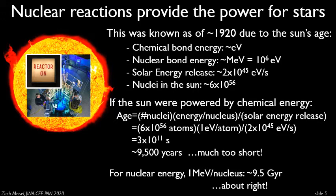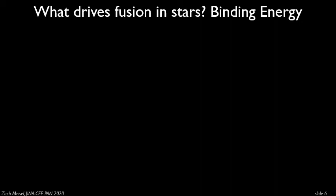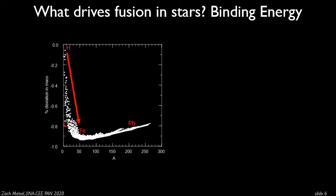So we know stars are nuclear reactors. What's actually driving these nuclear fusion reactions? We can understand this in terms of the binding energy — basically how much energy is stored when you take a bunch of protons and neutrons and combine them to make an atomic nucleus. If you took any given nucleus, you could weigh the individual nucleons — the protons and neutrons — separately, add that mass together, and get some amount of mass. Then you combine those nucleons into an atomic nucleus and compare that mass to the sum of the individual protons and neutrons.